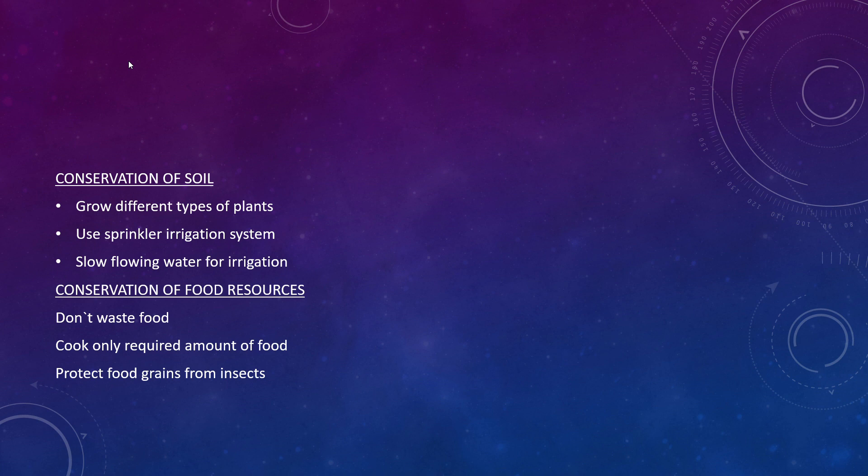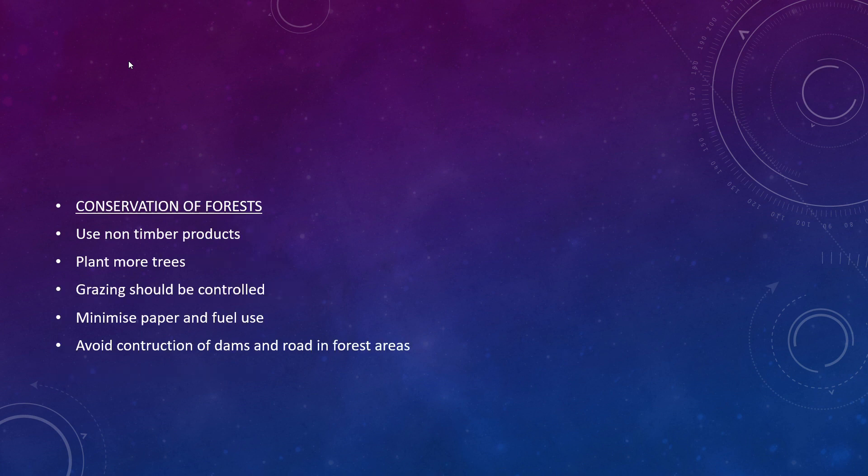Conservation of food resources: cook only the required amount of food to avoid wastage. Protect food grains from insects — we store a lot of grains at home and in agriculture, and these grains can be affected by insects, so both households and farmers should protect their food grains accordingly.